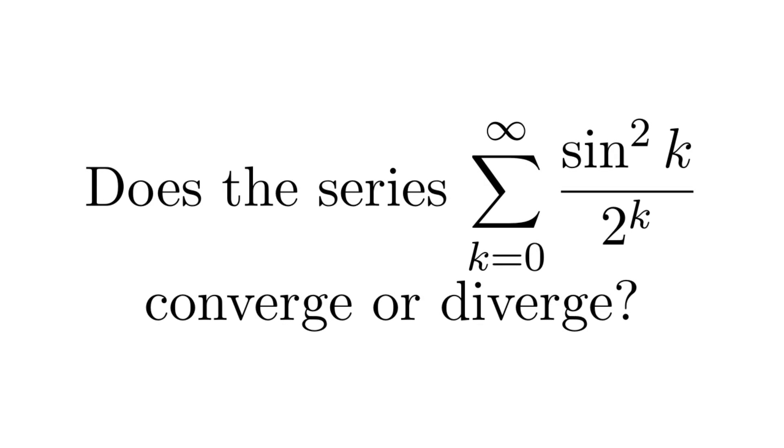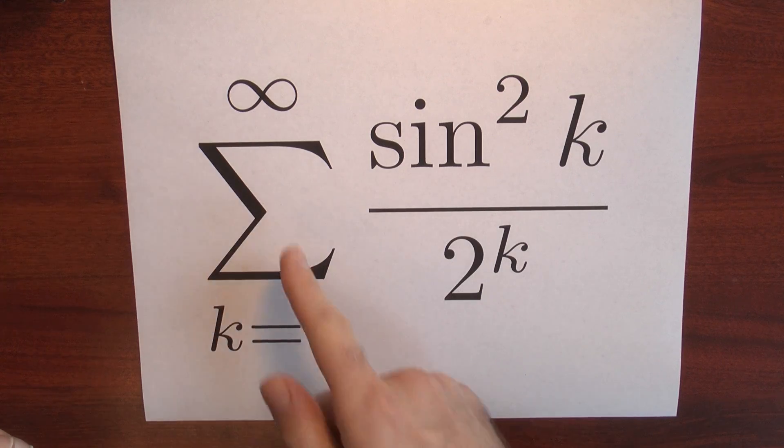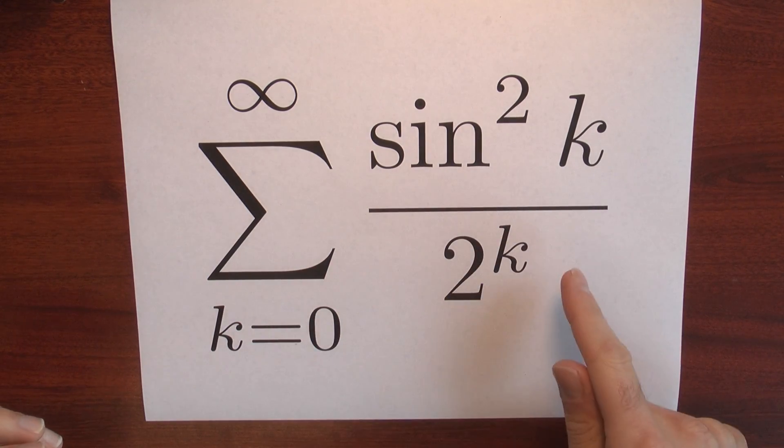Let's think about a more complicated series. How can we approach this series? It's the sum k goes from 0 to infinity of sine squared k divided by 2 to the k.